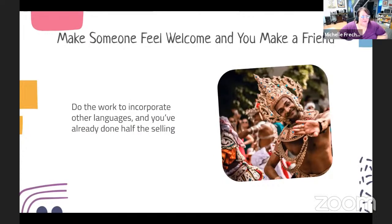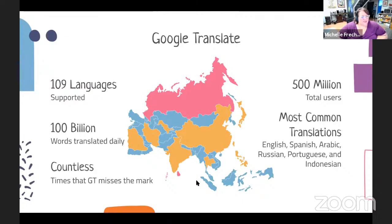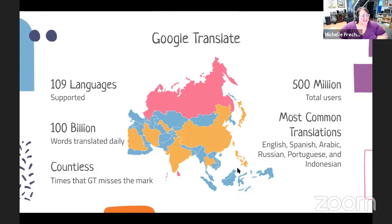It makes somebody feel welcome to your website. Google Translate supports 109 languages, and you can translate your website through services like Weglot into more than 109 languages because Weglot doesn't just use Google Translate — they use whatever the best translation is for the language you're translating into. According to Google Translate, over 100 billion words are translated every day. However, there are countless times that Google Translate misses what it's supposed to say, so there are over 500 million users relying on it — which is why human review matters.